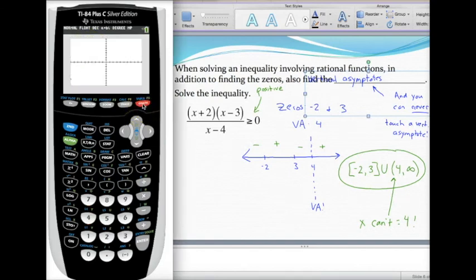So if I hit graph, here's what I'm seeing. Remember, negative two is where your graph may change directions. Positive three is where your graph may change directions. And then there's a vertical asymptote at four.